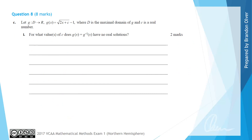For part c, we let g be the function with rule g(x) equals the square root of 2x plus c subtract 1, where d is the maximal domain of g and c is a real number. For part c(i) we're asked for what values of c does g(x) equals g⁻¹(x) have no solutions. We solve g(x) equals x, since that is a valid way of finding the points of intersection.